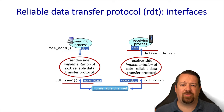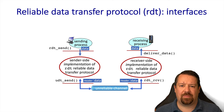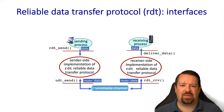Let's make this a little more formal. We'll start building up a simple reliable data transfer protocol, and we'll call it RDT for short. This will expose an RDT send function to the application, and it will call a UDT send function of the underlying network. On the receiving side, the network will hand off data to an RDT receive function, and RDT will deliver it via the deliver data function. On both ends of the connection within the transport protocol, there will be an implementation of the reliability functions needed.